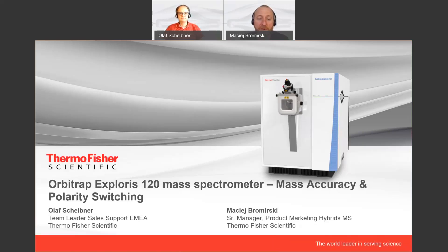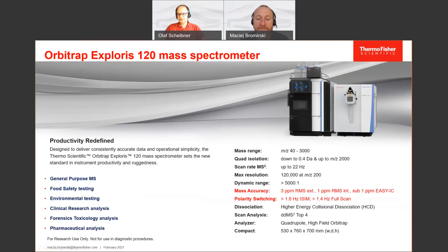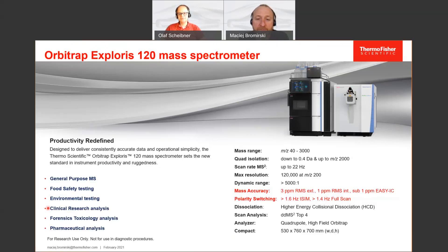Thank you for joining us today to talk about the mass accuracy and polarity switching on the Orbitrap Exploris 120. Let's have a look into these two exciting topics. The Orbitrap Exploris 120 is a general purpose mass spectrometer. We have a lot of applications that run perfectly on this instrument, including food safety testing, environmental testing, clinical research analysis, forensic toxicology, and pharmaceutical analysis. This is a broad range of applications that benefits from the high resolution and high sensitivity of this instrument.